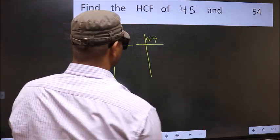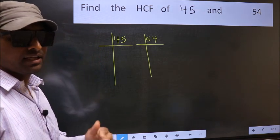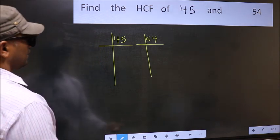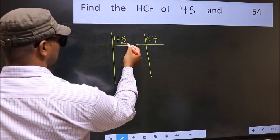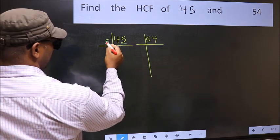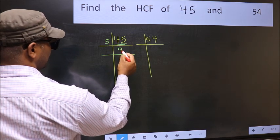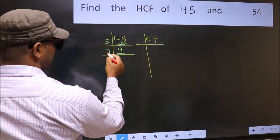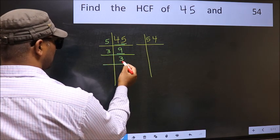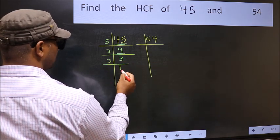This is your step 1. Next, for this number, last digit 5, so take 5. When do we get 45 in the 5 table? 5 nines 45. Now 9 is 3×3. 3 is a prime number, so 3 ones is 3.